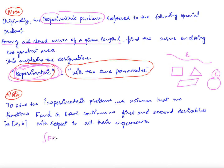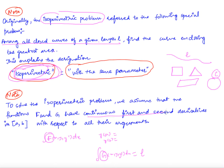Our problem is to obtain the extrema of a functional subject to boundary conditions y(a) and y(b) being given, and the subsidiary condition that the integral from a to b of G(x, y, y') dx equals L. We assume that F and G have continuous first and second order derivatives in [a, b] with respect to all their arguments.